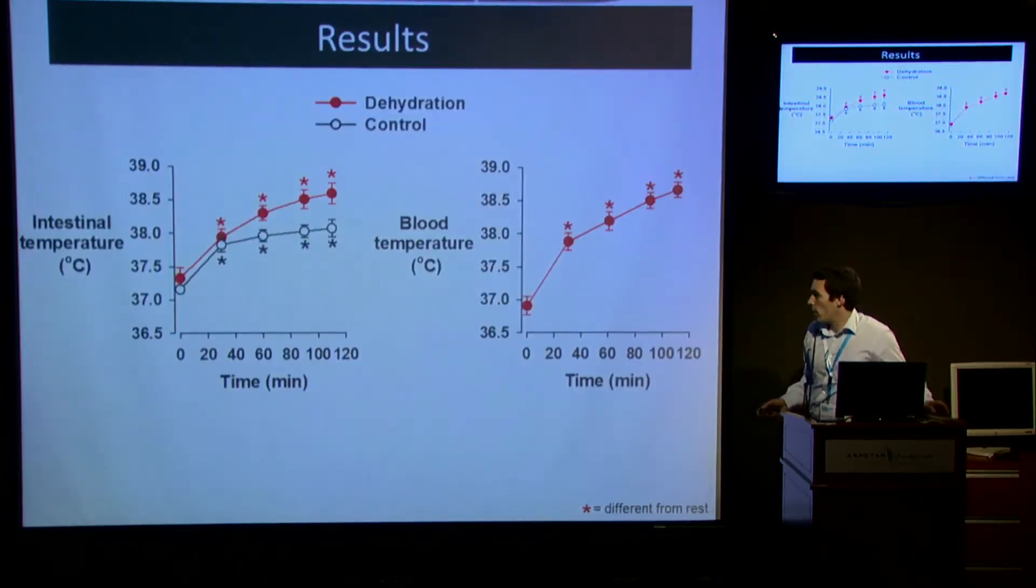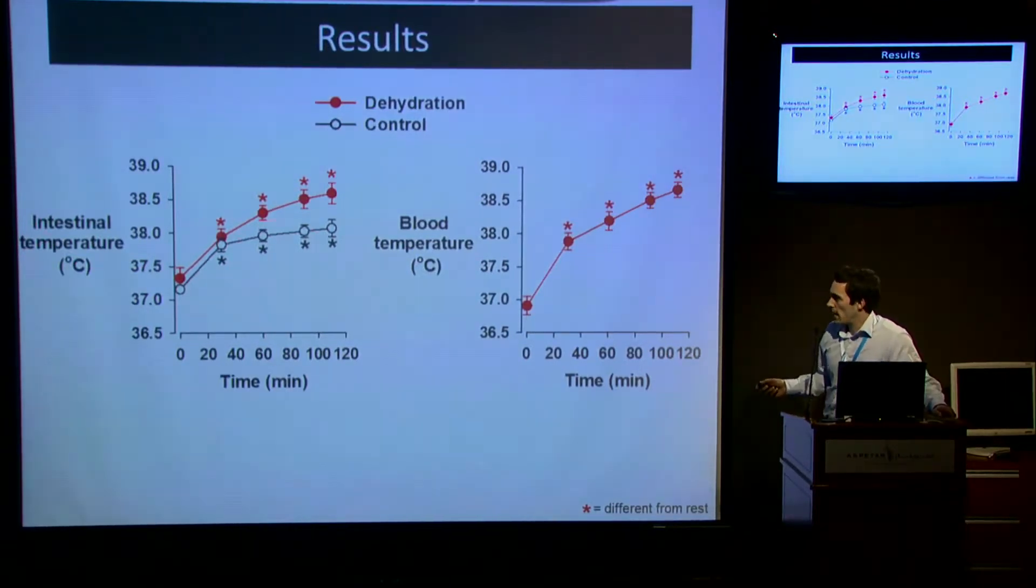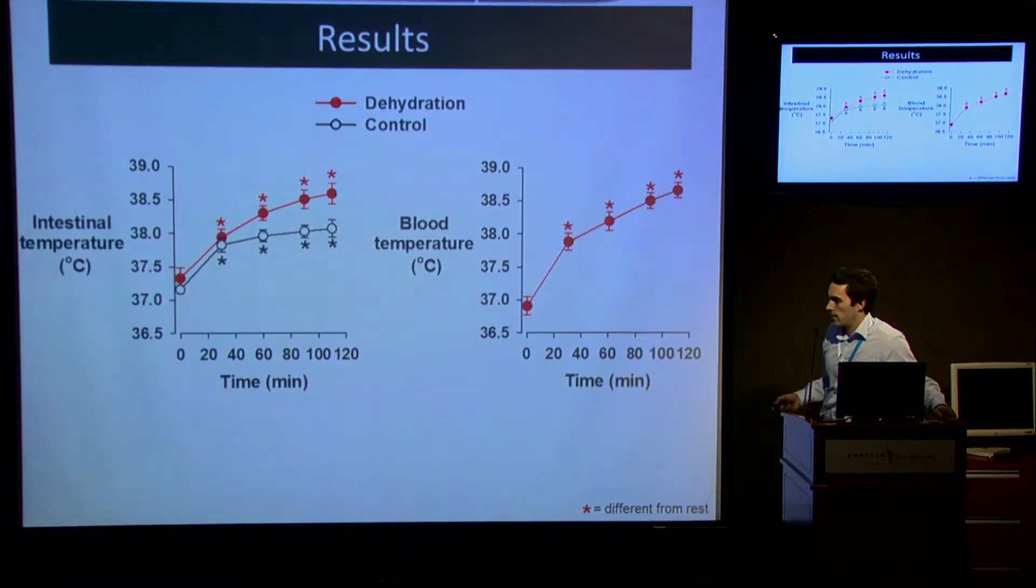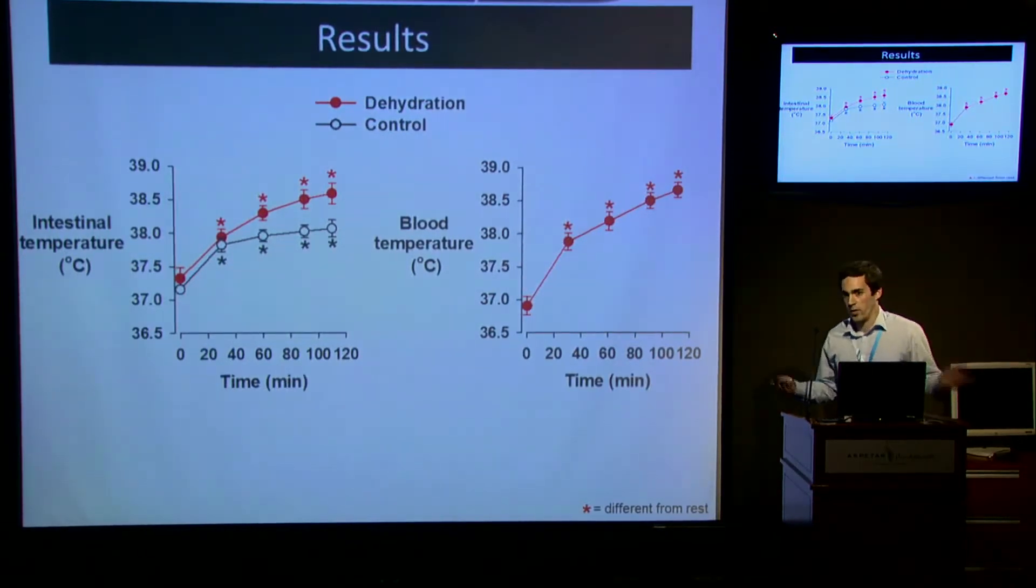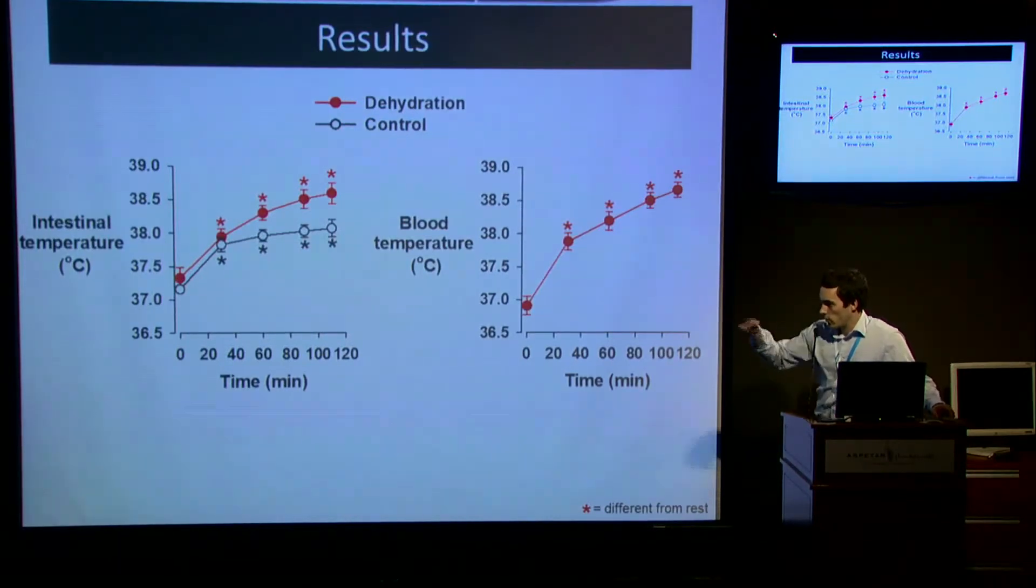What did we find? Well, predictably, with progressive dehydration, core temperature continued to rise throughout one hour 20 minutes of exercise, whereas in control conditions, core temperature initially increased up to around half an hour before tending to level off. In terms of blood temperature, it was well reflected in intestinal temperature, slightly elevated at the end. Professor Nybo's work will show that they track each other fairly well, and blood temperature in the internal jugular vein is always higher than measurements of core temperature.